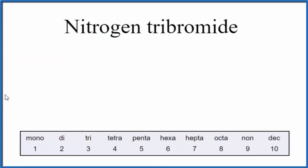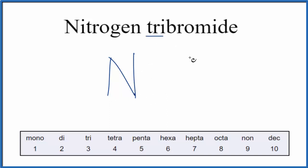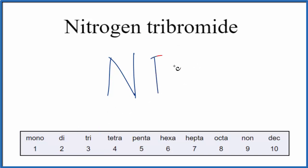What we do need to worry about, though, are using these prefixes here to write the formula. So as we look at the formula, we have nitrogen — that's N — and there's nothing written, so we assume there's one nitrogen. Then we have tri-bromide. Tri means three, like tricycle. So we have Br, and that tri tells us we have three bromine atoms. So the formula for nitrogen tribromide is NBr3.